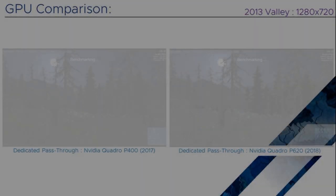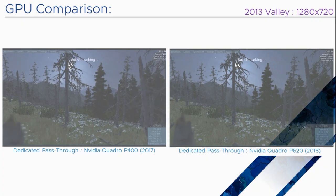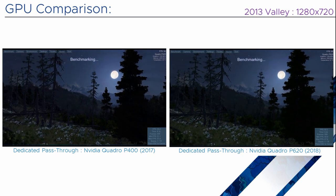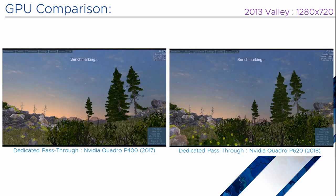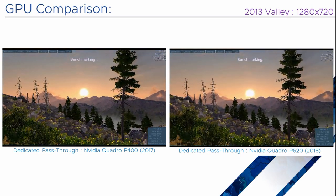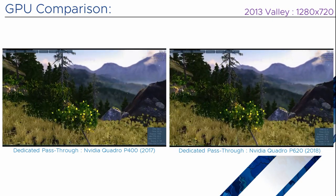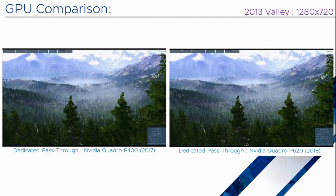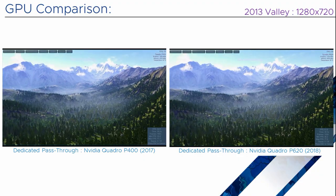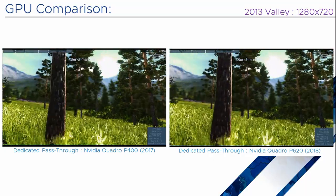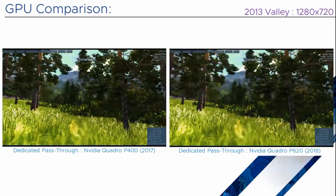The next benchmark we're going to run is the 2013 benchmark called Valley, running in 1280x720. Unfortunately the software based card and the older Quadro 2000 didn't really perform at all on this benchmark, so I've just got the two newer Pascal series, the Quadro P series. We've got the NVIDIA Quadro P400 and the slightly newer P620 from 2018. Generally the same card, one's just a little bit more powerful and a slightly newer generation. As you can see both doing a reasonably good job of this, but the P620 slightly smoother than the P400.